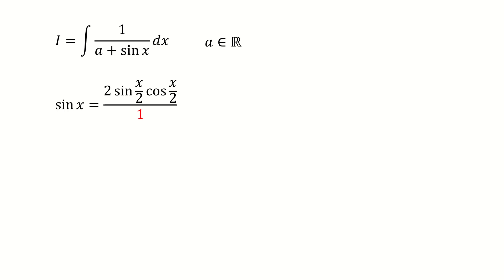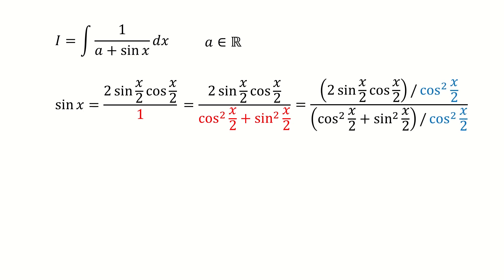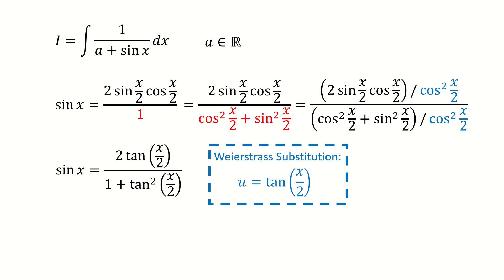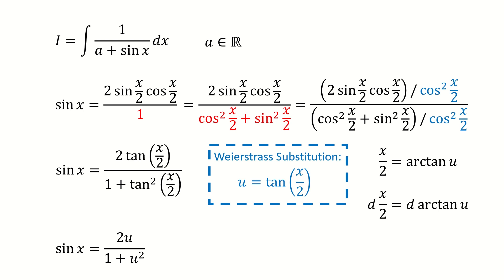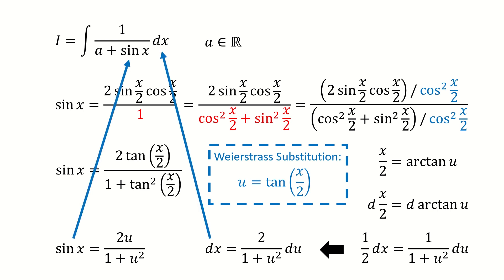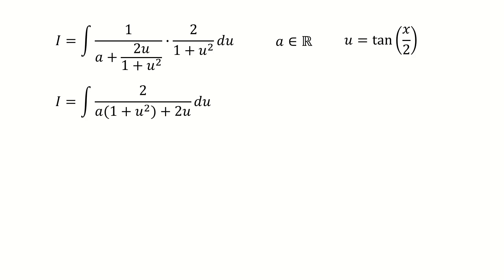First, let's write sin x using the double-angle formula. Note for the number 1 in the denominator — it looks trivial, but we use the identity to write it as cosine squared plus sin squared. Then we divide by cosine squared on both numerator and denominator. We can then apply the Weierstrass substitution and let u equal tangent of half x. So sin x is reduced accordingly. Since half x equals arctangent u, we apply the differential operator to both sides: dx equals 2 over 1 plus u squared du. We then plug sin x and dx into the original integral and simplify the product of the two fractions.